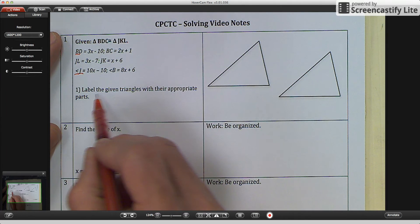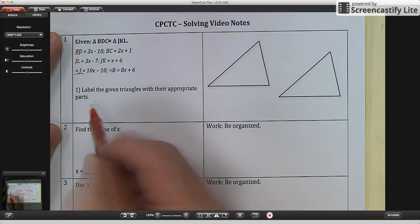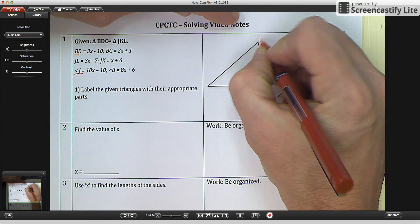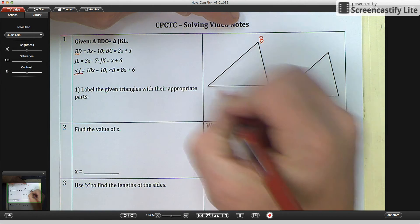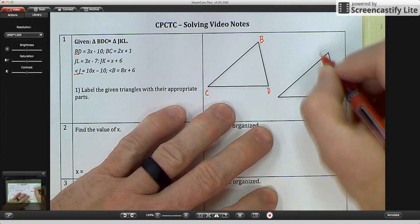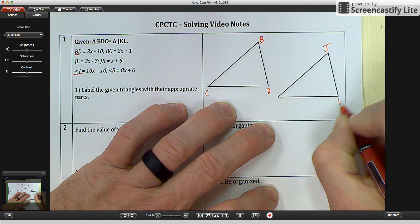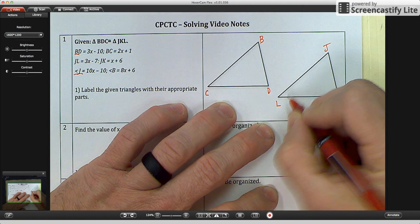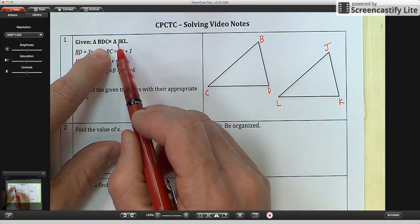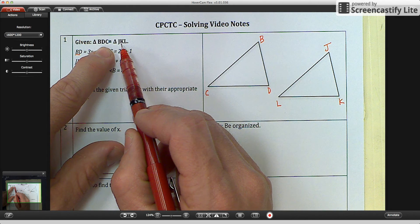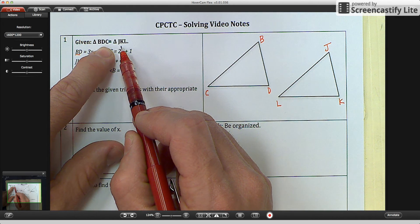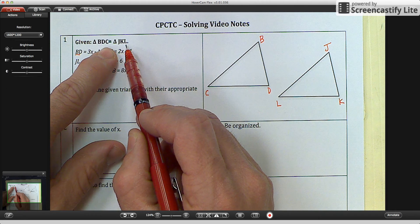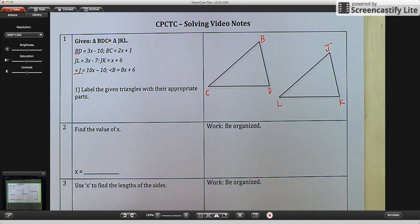So let's go over here. Then it says, label the given triangles with their appropriate parts. So we have triangle BDC and we have triangle JKL. Now B and J are the first letters, so they're congruent. D and K are the second letters, so they're congruent. C and L are the third letters, so they are congruent.